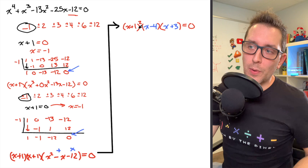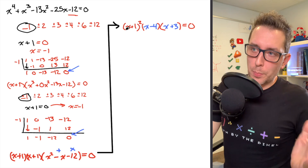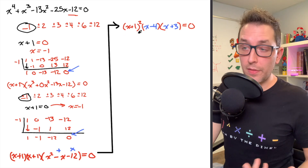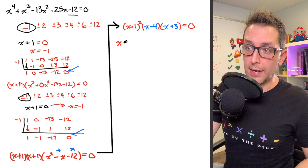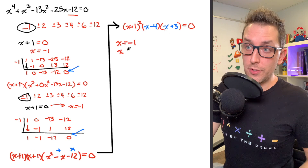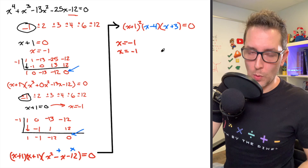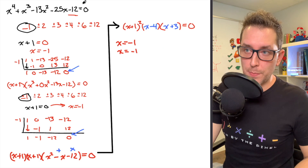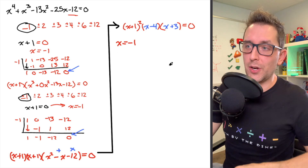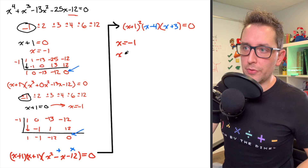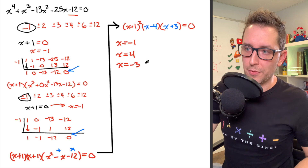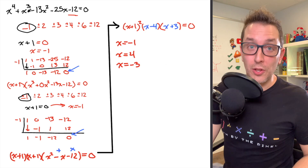After all that work, we can finally solve this degree 4 polynomial equation. Since we have a product of binomials, each set of brackets contains a solution. Setting the first binomial equal to 0 gives x equals negative 1 — and we actually have two of those, meaning a repeated root. From the second binomial x equals 4 is a solution, and our final solution is x equals negative 3. With that, we've solved our degree 4 polynomial equation.